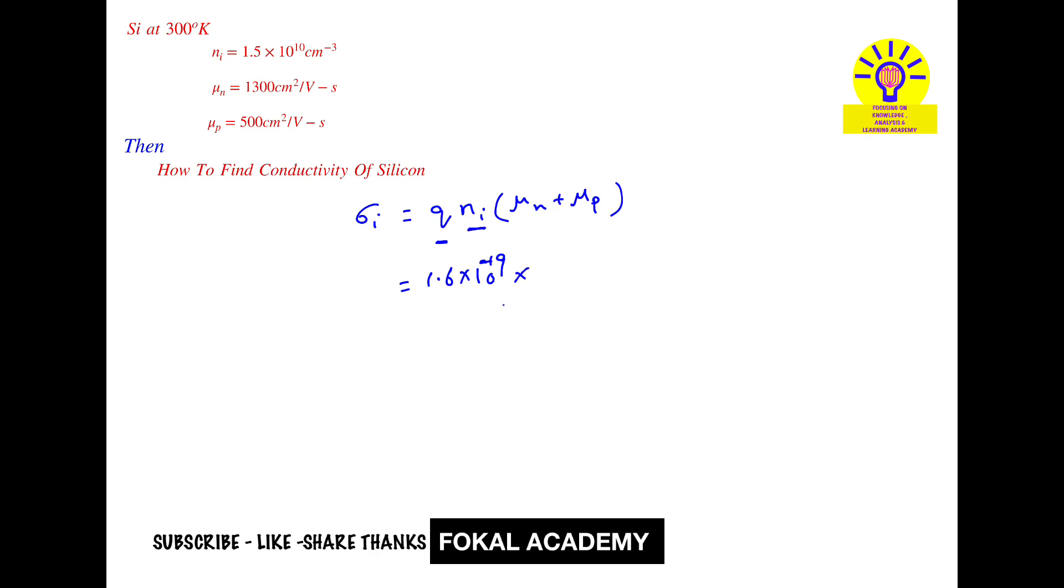Ni is given as intrinsic concentration that is 1.5 into 10 power 10, and mobility of electrons is given as 1300 plus mobility of holes is given as 500.